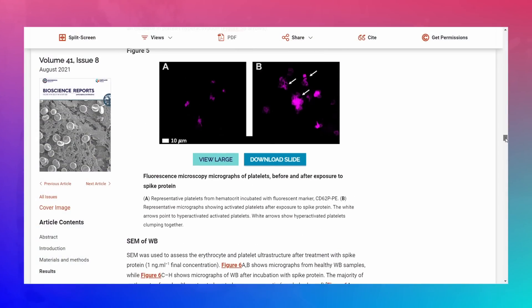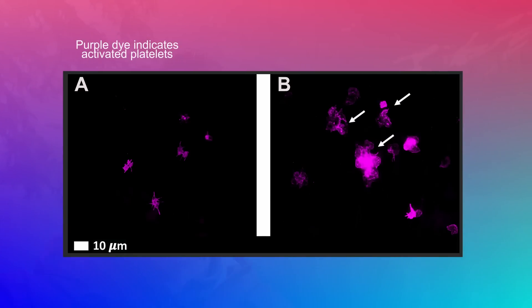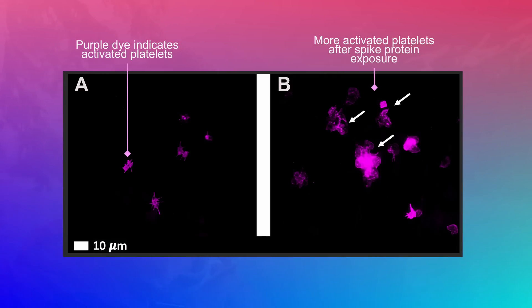On top of that, the same amount of spike protein was used by these authors to show that when blood is exposed to it, the spike protein was also activating platelets. As mentioned in past videos, activated platelets are involved in clot formation and contribute to a pro-inflammatory state. Spike protein not only leads to increased activation of platelets, it also leads to clumping of platelets — also not a welcome scenario.